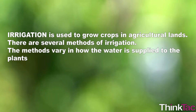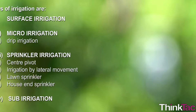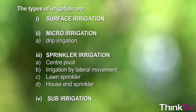Irrigation is used to grow crops in agricultural lands. There are several methods of irrigation, and they vary in how water is supplied to the plants. The types of irrigation are: surface irrigation; micro-irrigation, for example drip irrigation; sprinkler irrigation, which includes center pivot irrigation, irrigation by lateral movement, a lawn sprinkler, and a house end sprinkler; and the fourth category, which is sub-irrigation.